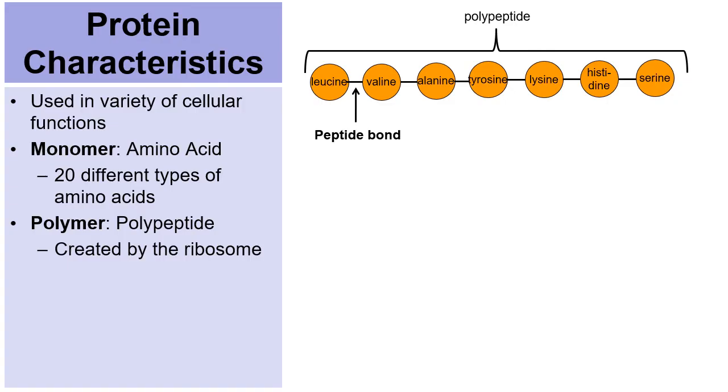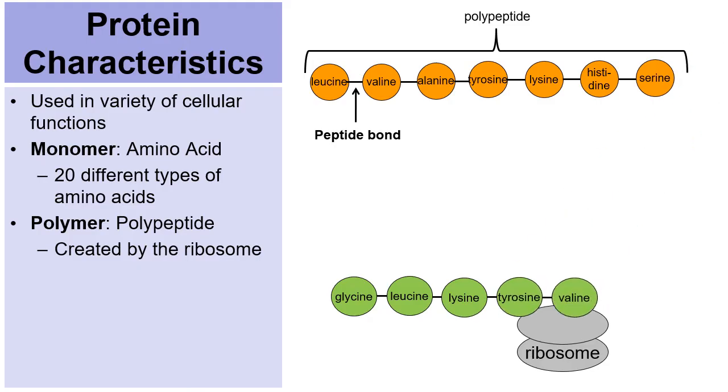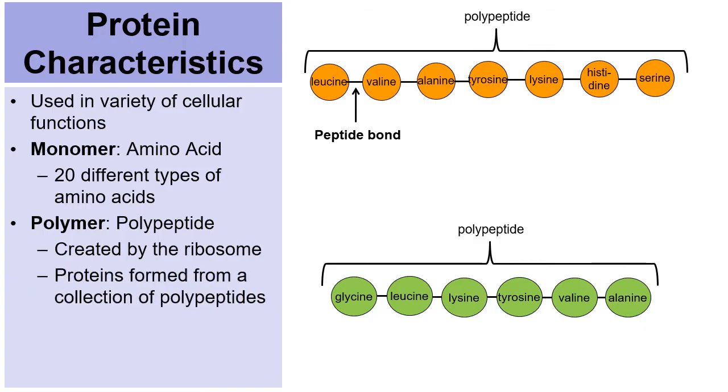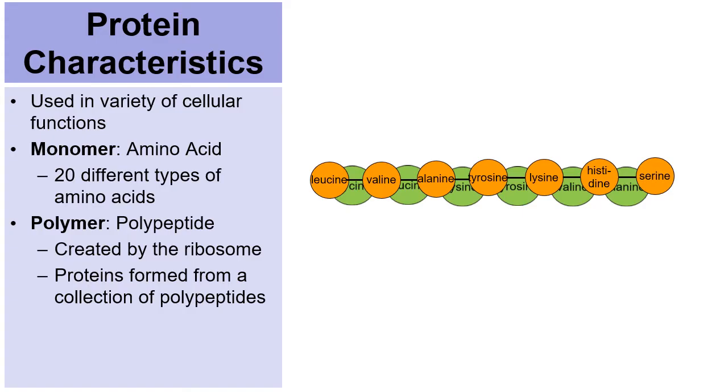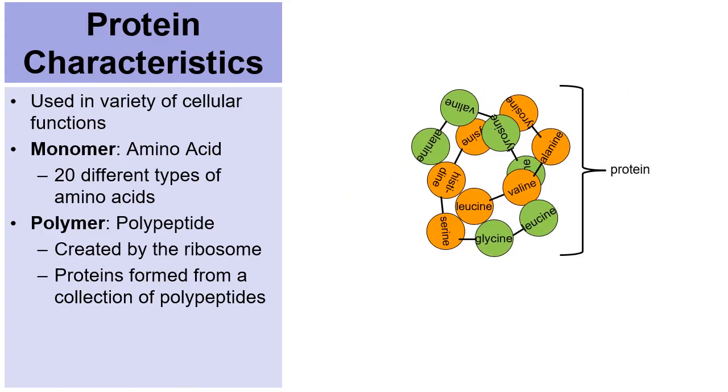Now, polypeptides are not quite proteins, but they're created by the ribosome. So here's a ribosome. What the ribosome does is it gathers amino acids. Maybe it gathers glycine and then bonds it with leucine and then bonds it with lysine and bonds it with another amino acid and then another amino acid and then another amino acid. So notice we have two polypeptides here, one in orange and one in green. Well, what happens next is proteins are formed from a collection of polypeptides.